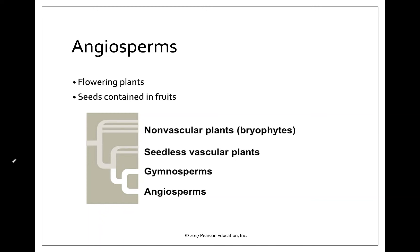The last group of plants we're going to look at are the angiosperms. The word angio means container, and they get this name because their seeds are contained within fruits that develop from flowers. Angiosperms are going to be sister to gymnosperms, and they have two distinguishing characteristics: they have flowers, and they have fruits.